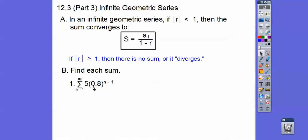So here's r. And the absolute value of that is less than 1. So this does have a sum. We just need to find this first term right there. So let's go ahead and plug in n equals 1. So that's going to be our first term.